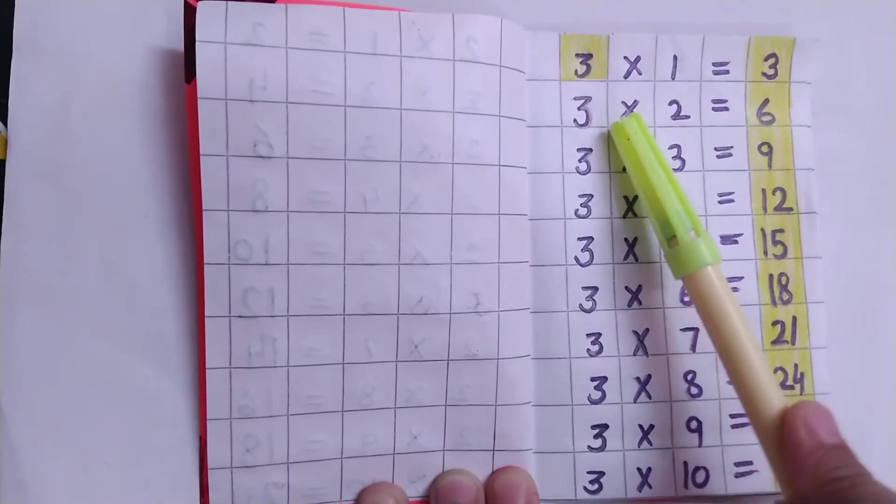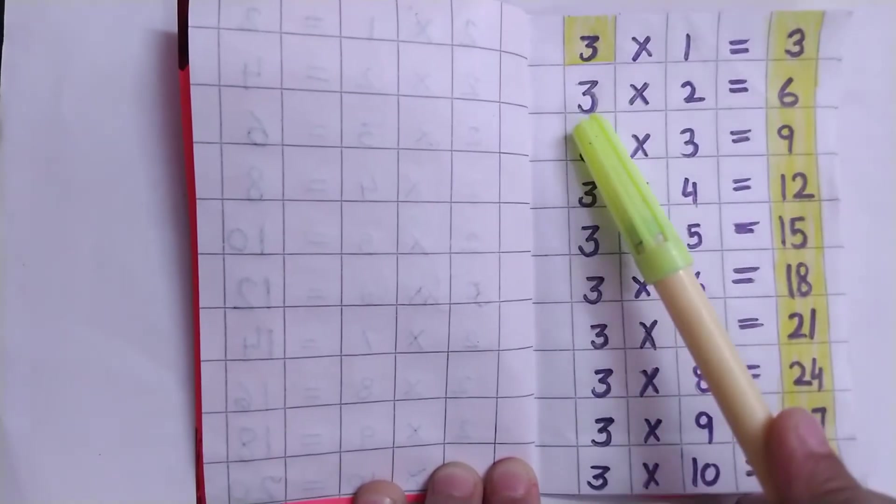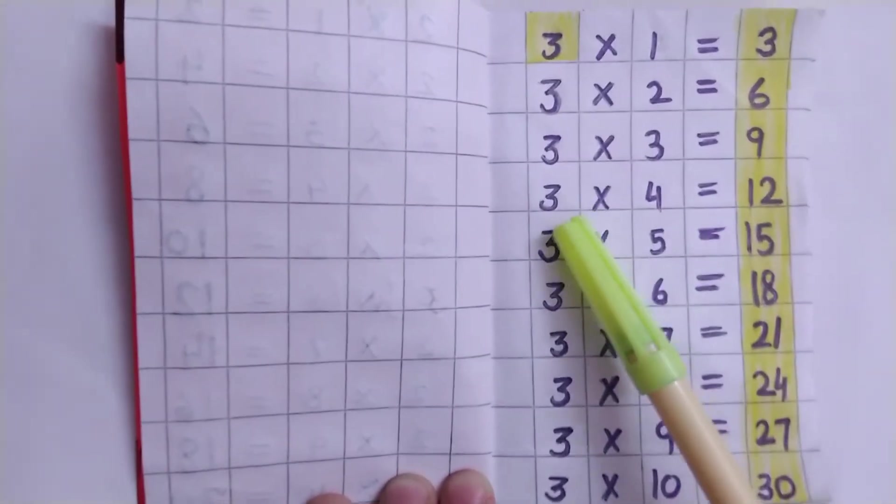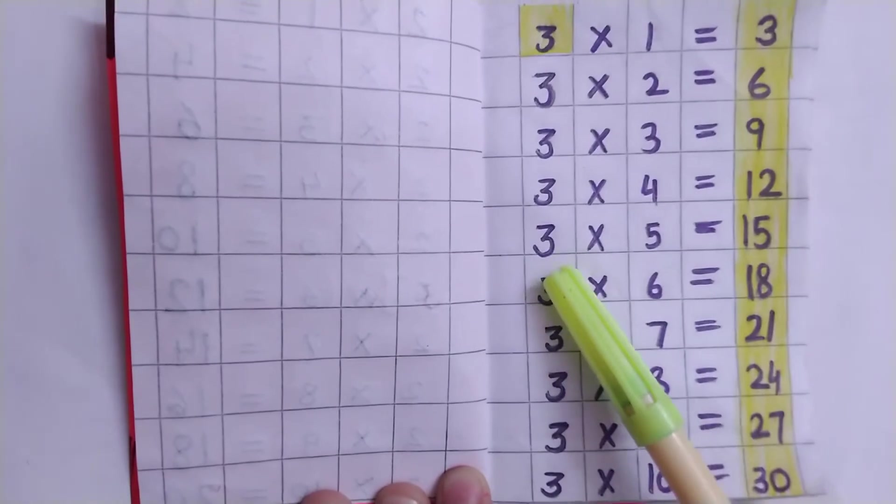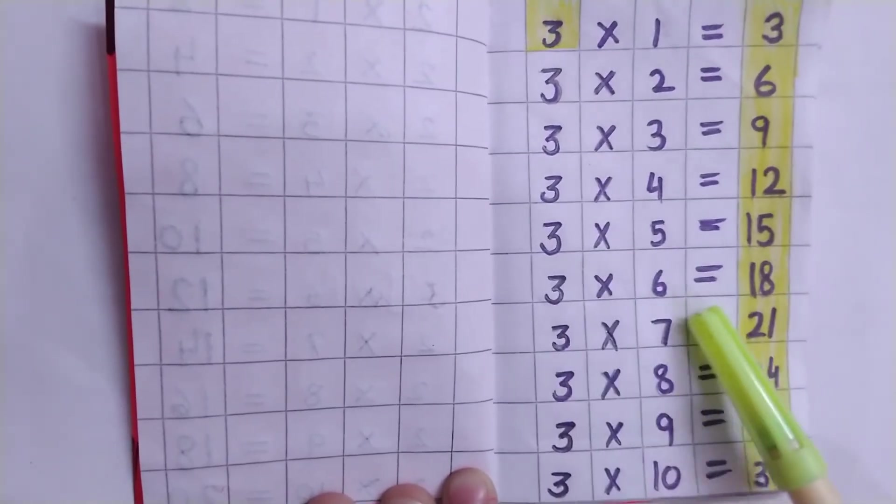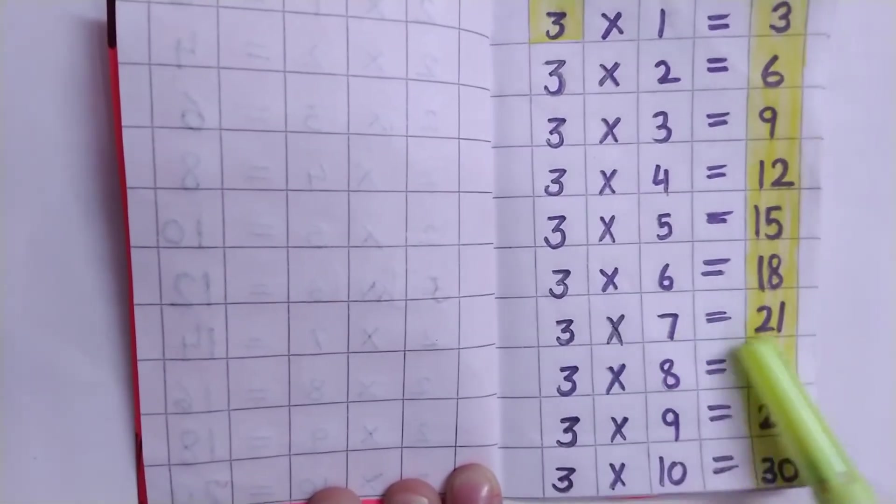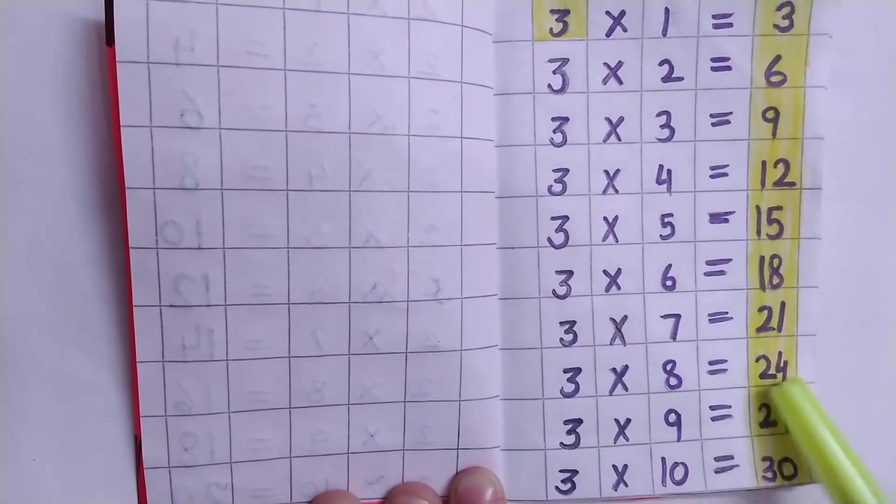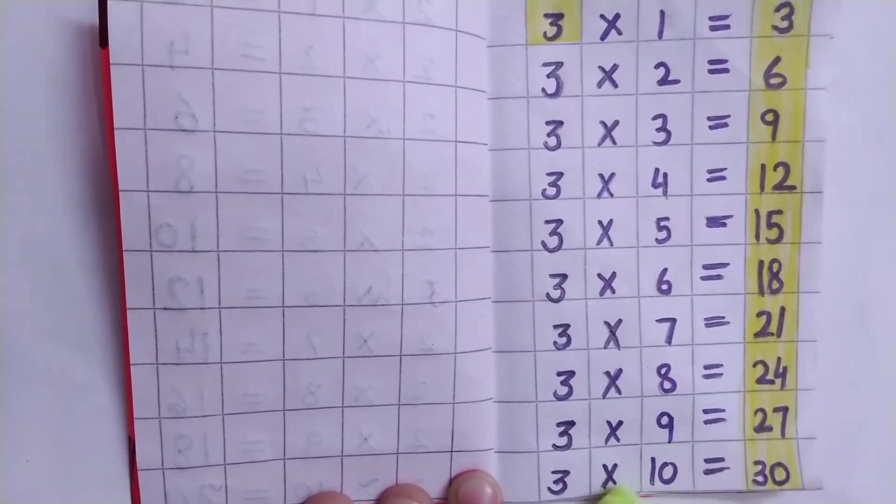Table of 3: 3×1=3, 3×2=6, 3×3=9, 3×4=12, 3×5=15, 3×6=18, 3×7=21, 3×8=24, 3×9=27, 3×10=30.